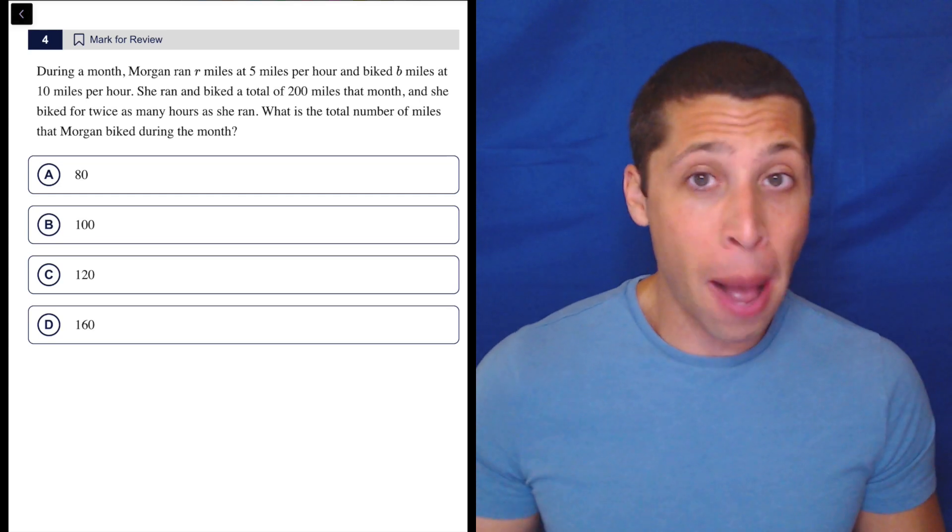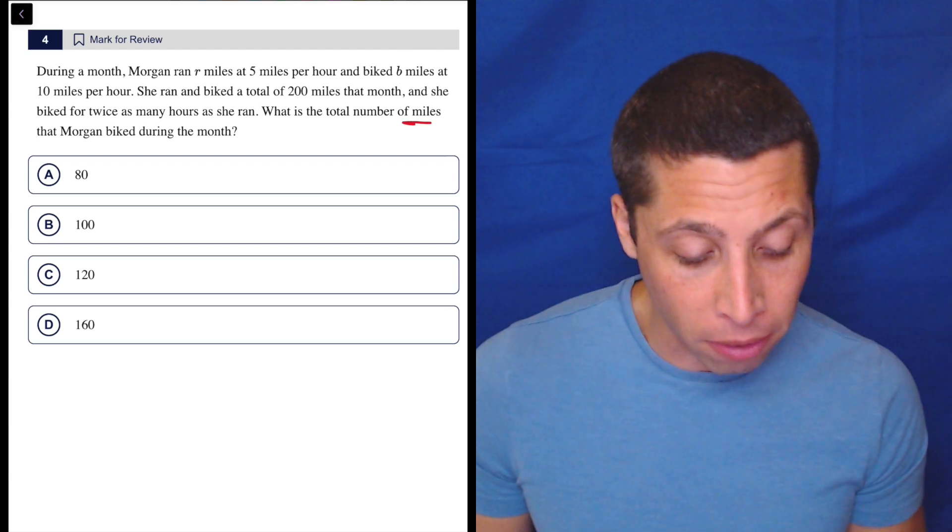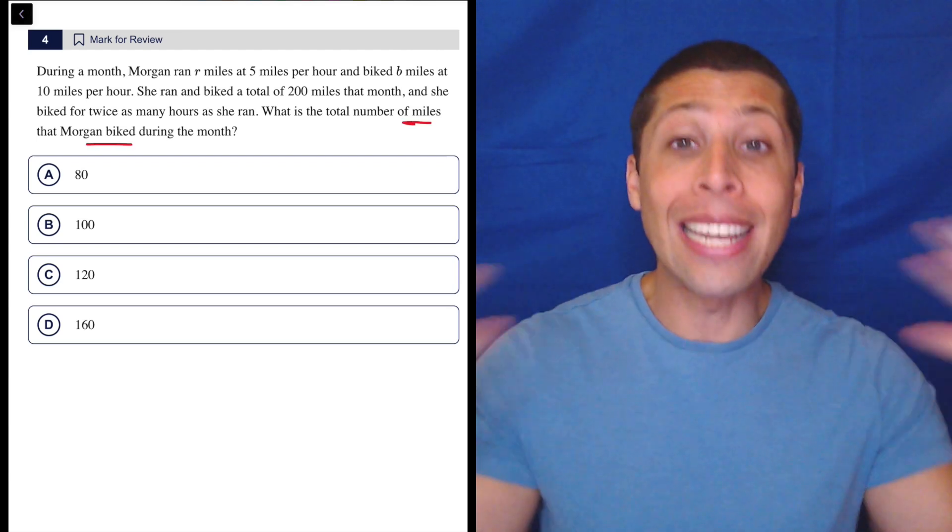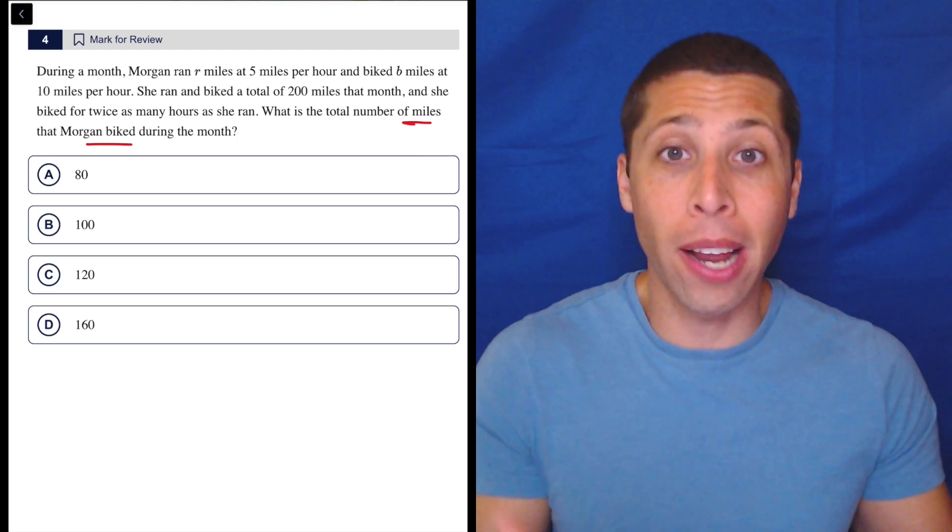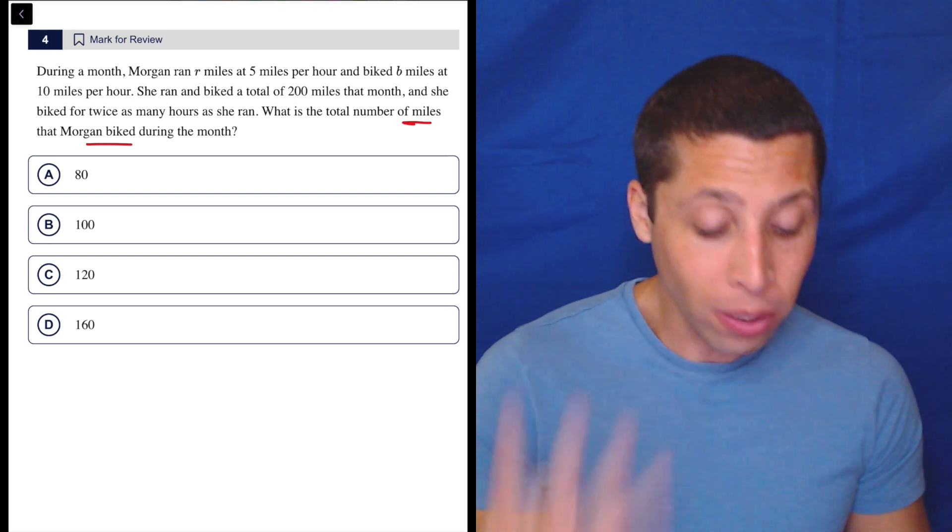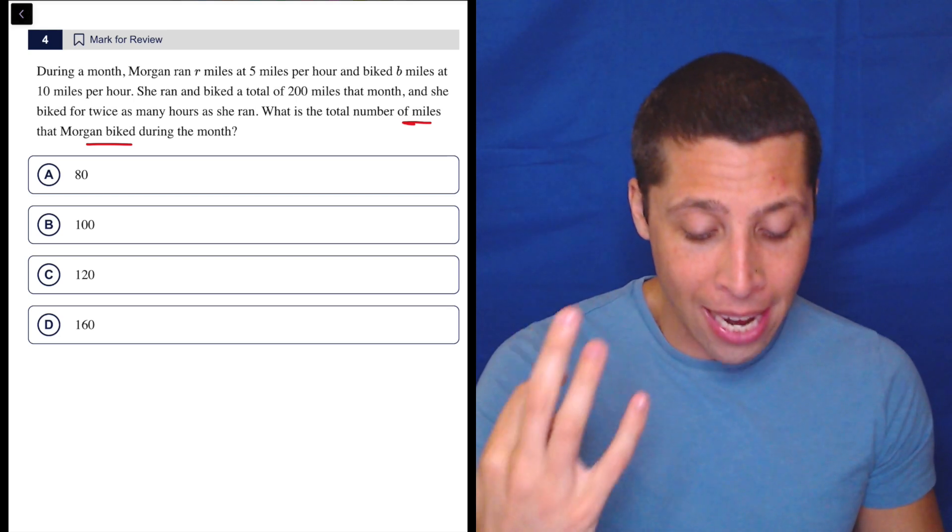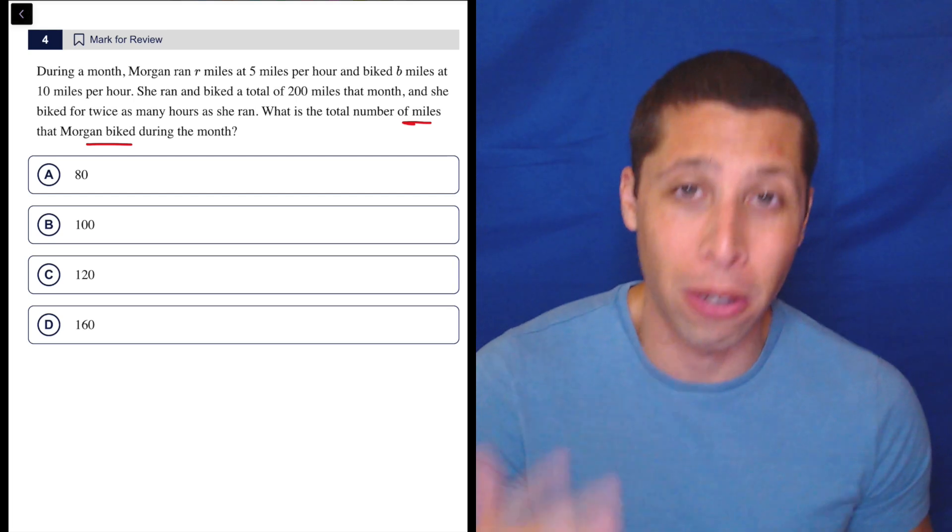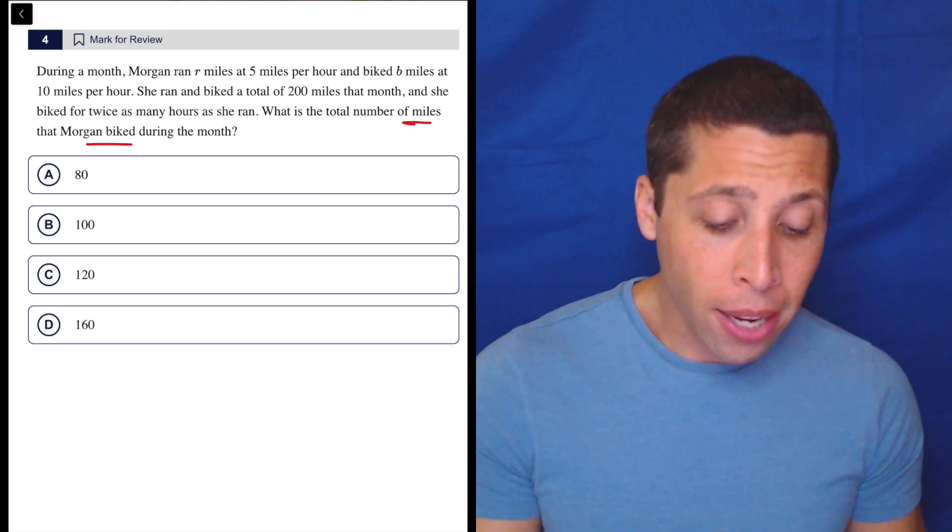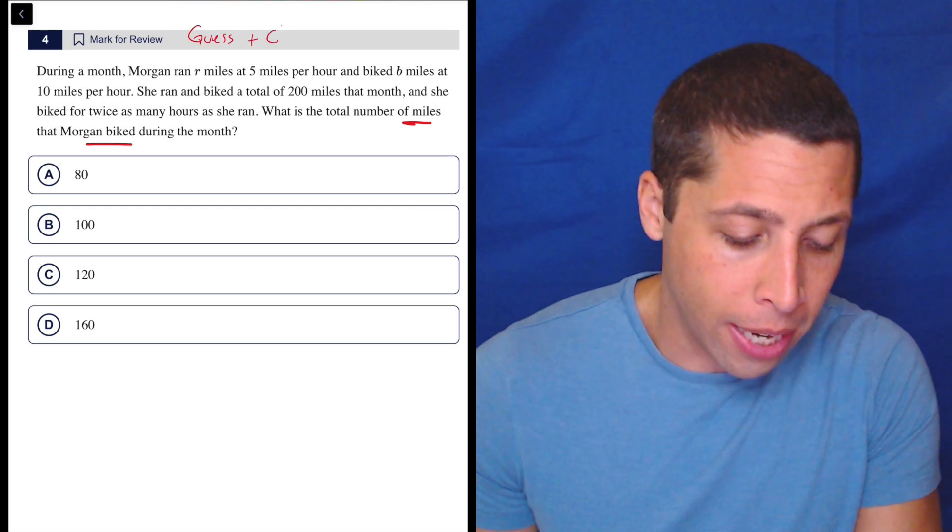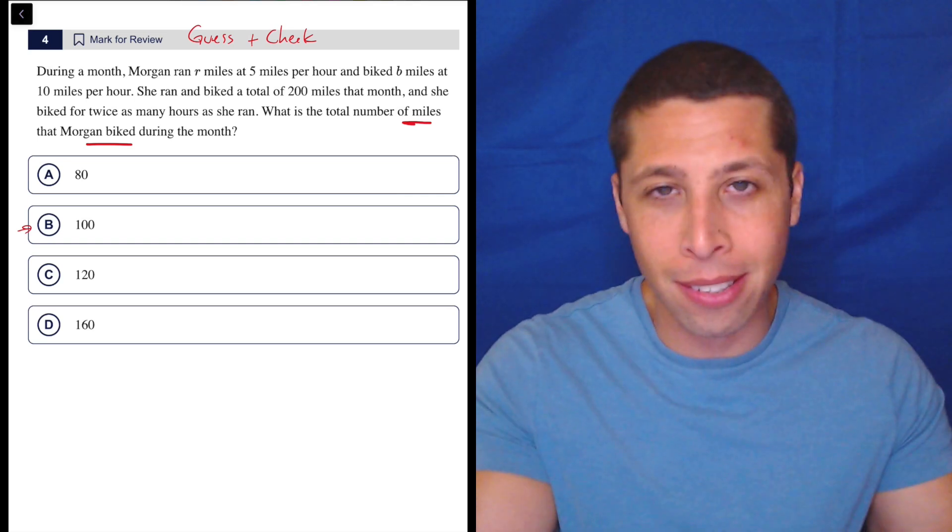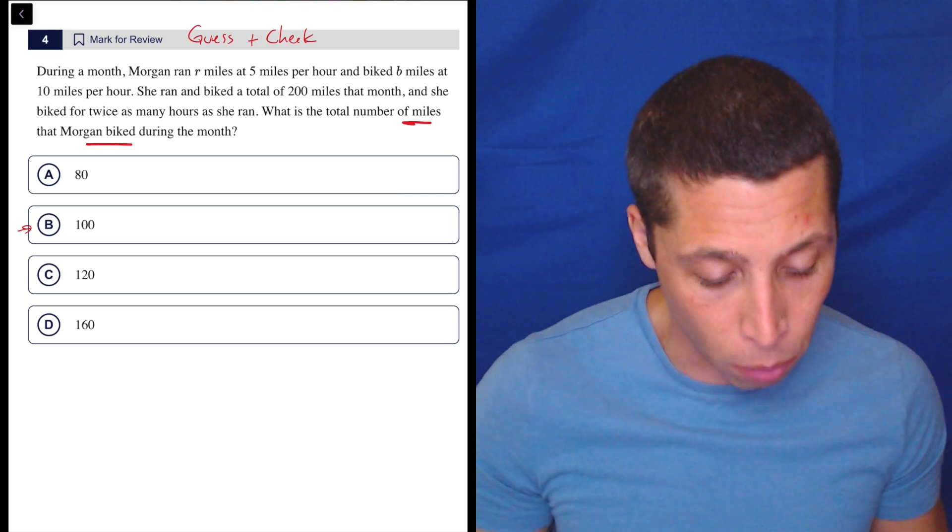But I have some options, right? So when they say, what is the total number of miles that Morgan bikes during the month? It's not like I have to choose a number out of thin air. That's why we do algebra - X could be any number. But we only have four numbers that this could be: 80, 100, 120, or 160. Remember, the answer choices are part of the question. They sometimes give you even more helpful information than the question does. So my normal guess and check process here is going to be to start with B, because it's in the middle and 100 is a nice number.